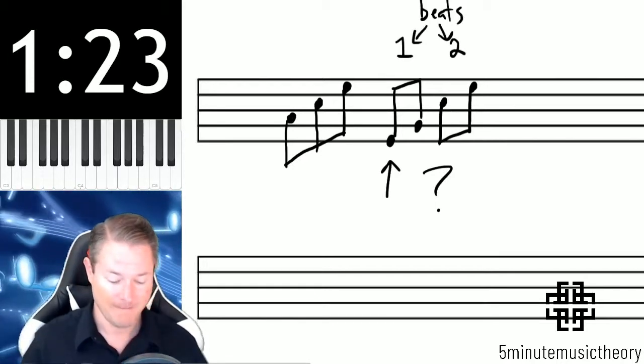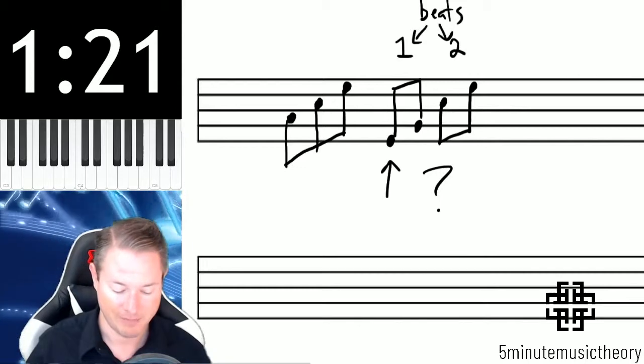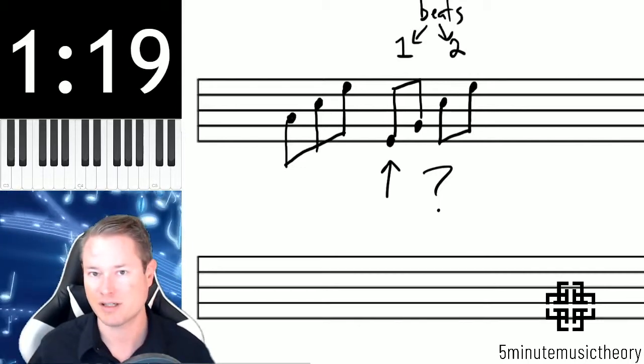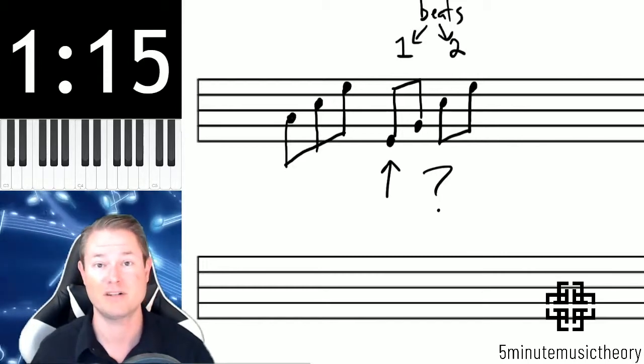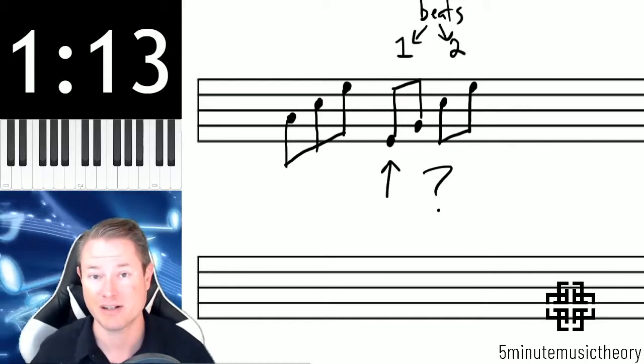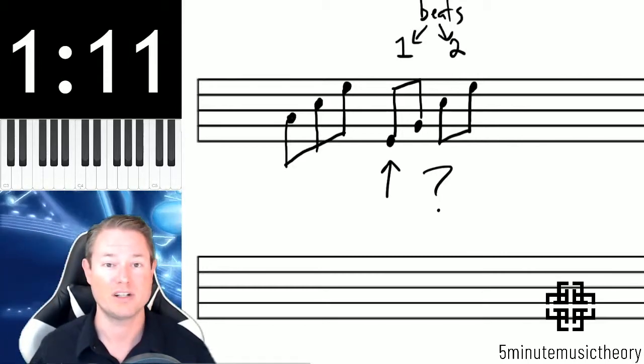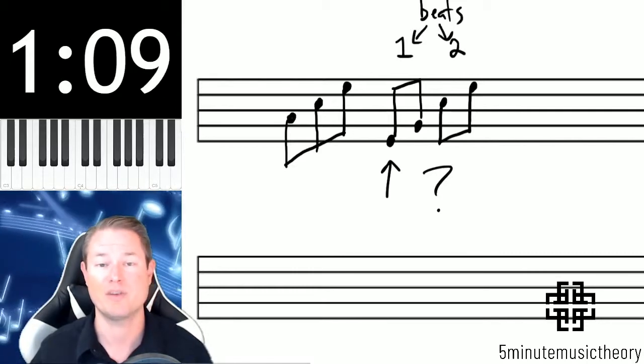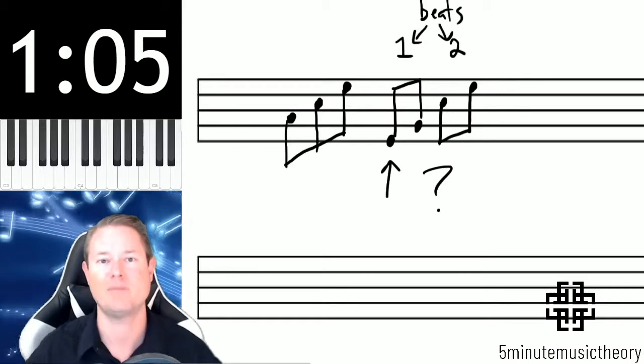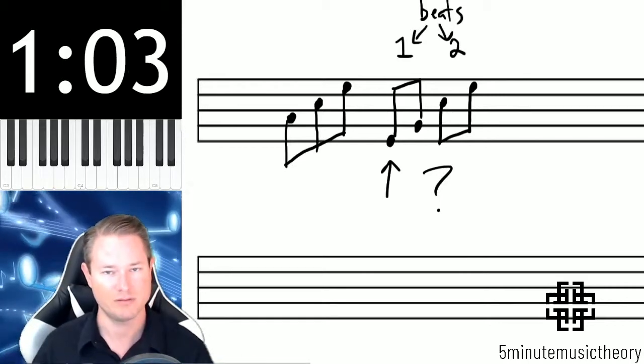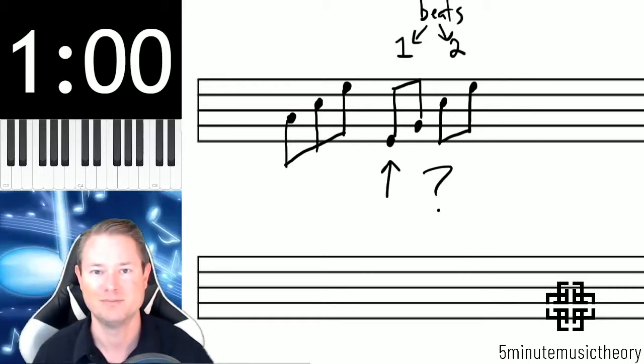So just to quickly summarize, the beams are connecting all of these notes together. But in order to determine the stem direction and where the beam goes, you must find the note that's farthest from the center of the staff. And once you found that note, you determine what the stem direction would be of that note. And that's what all of the stem directions will be in that group. Beam them, and you're done. Thank you.